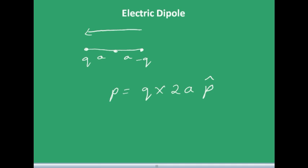P-cap indicates the direction of the dipole moment, from the negative charge to the positive charge. If you are looking at this dipole from a very far distance, you can say that the electric field due to each point charge roughly cancels the other. This is not the case when you are dealing with distances comparable to the separation between the two point charges.